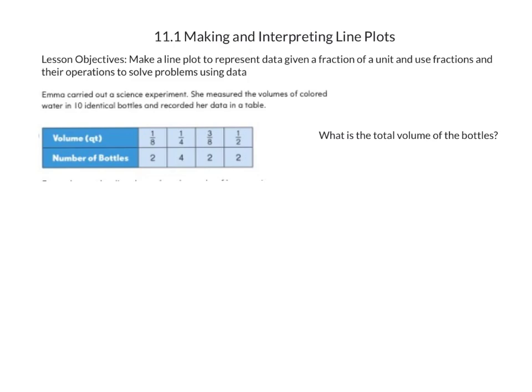For our first example, Emma carried out a science experiment. She measured the volumes of colored water in 10 identical bottles and recorded her data in a table. We can take a look at our table — we have four different volumes in quarts and the number of bottles at each volume.